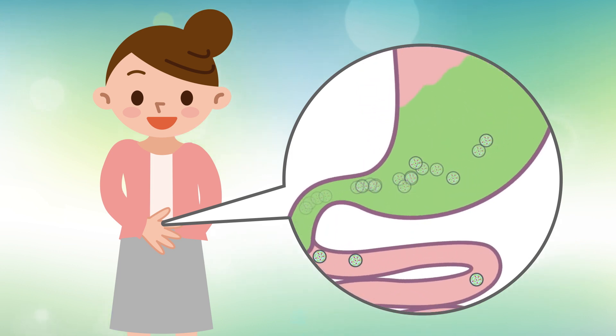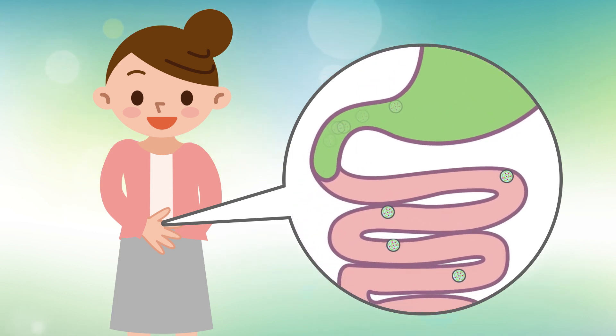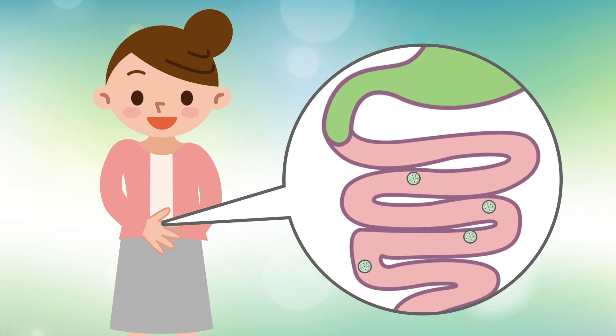Research indicates that anywhere from 80 to 90% of traditional unprotected live probiotic cells will be killed off before reaching your intestine due to the extreme acidic acid of the stomach and the release of bile from the gallbladder.